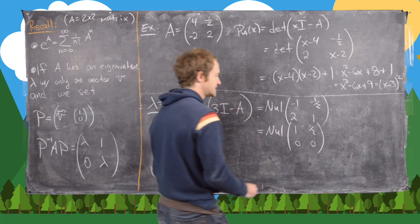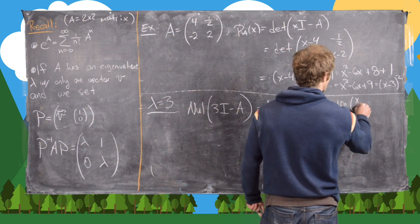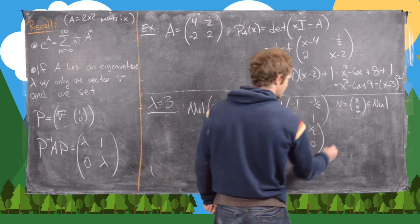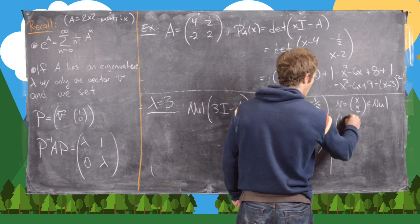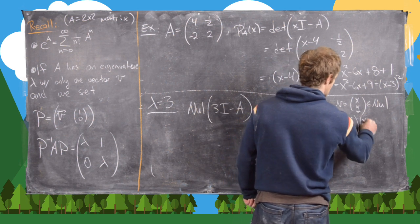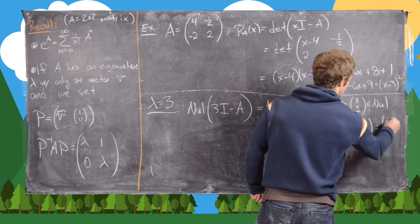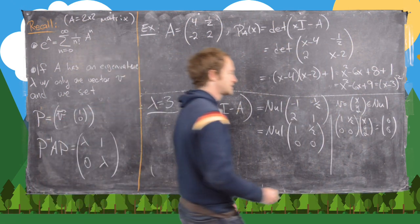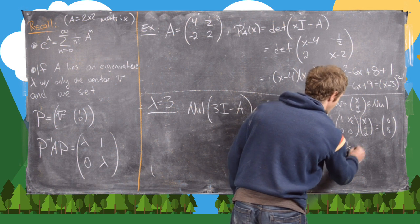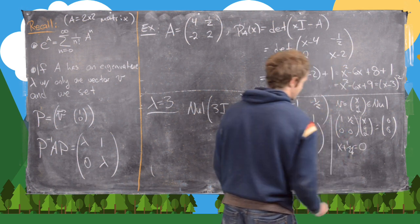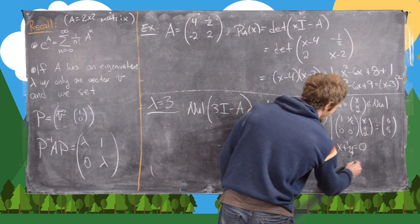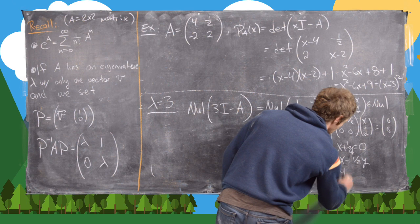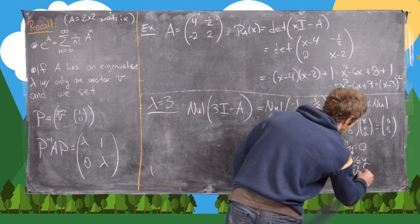But now notice if v, which equals (x, y), is in the null space, then that means that [1, 1/2; 0, 0] times (x, y) has got to be the zero vector. Which tells us that x + (1/2)y is equal to 0, which tells us that x equals -y/2. And then y is what we sometimes call a free variable.